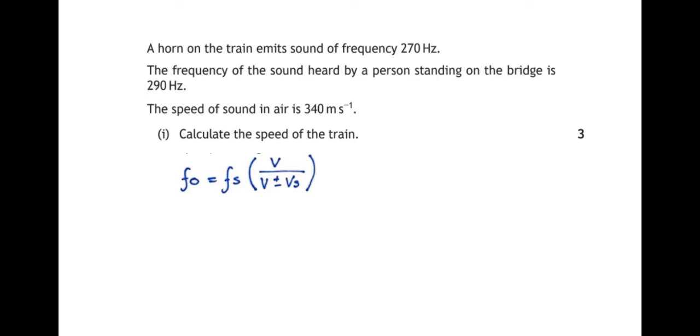What values do we have in the question? Well, the horn on the train emits a sound of frequency 270 hertz. That's the frequency being emitted by the source, FS. The frequency of the sound heard by the person standing on the bridge is 290 hertz. That's FO, the frequency observed by the observer. The speed of sound in air is 340 meters per second. That is V in this formula.